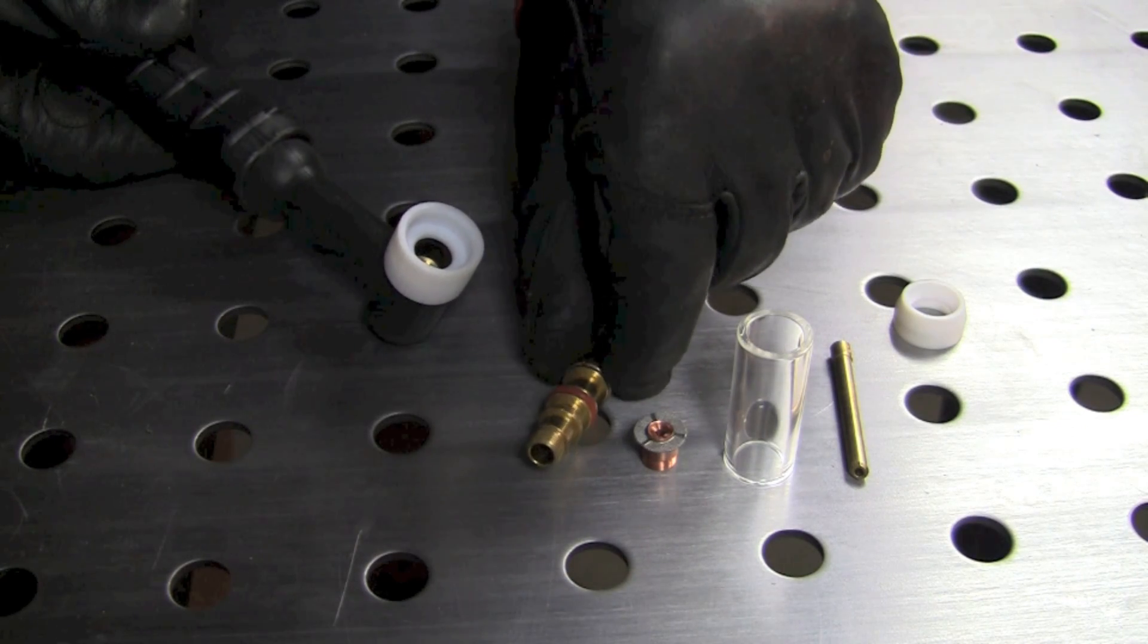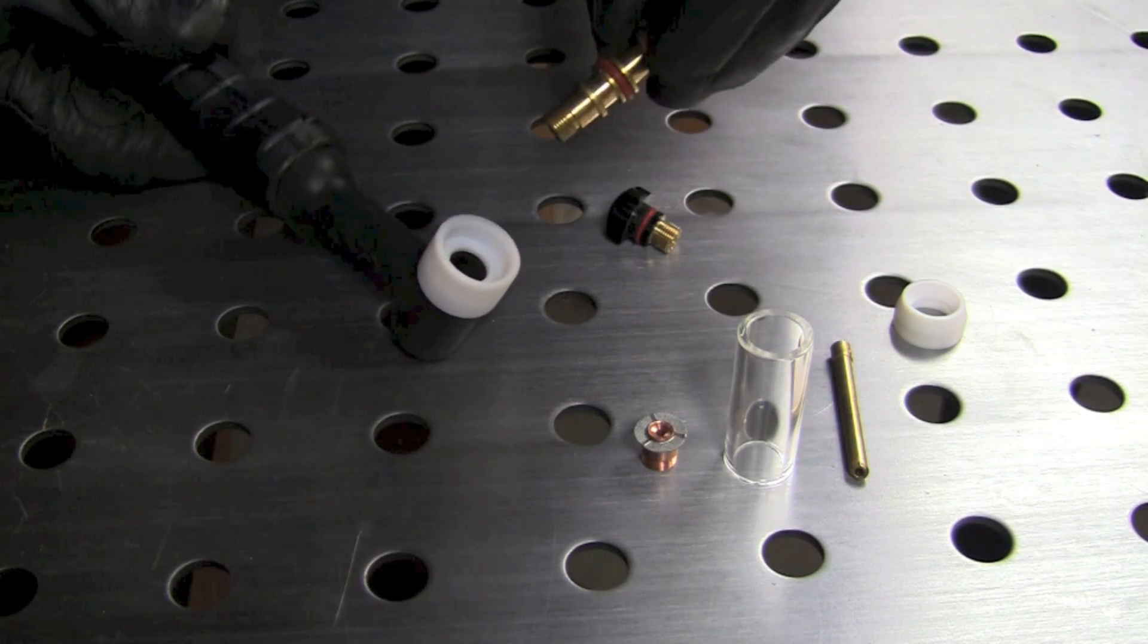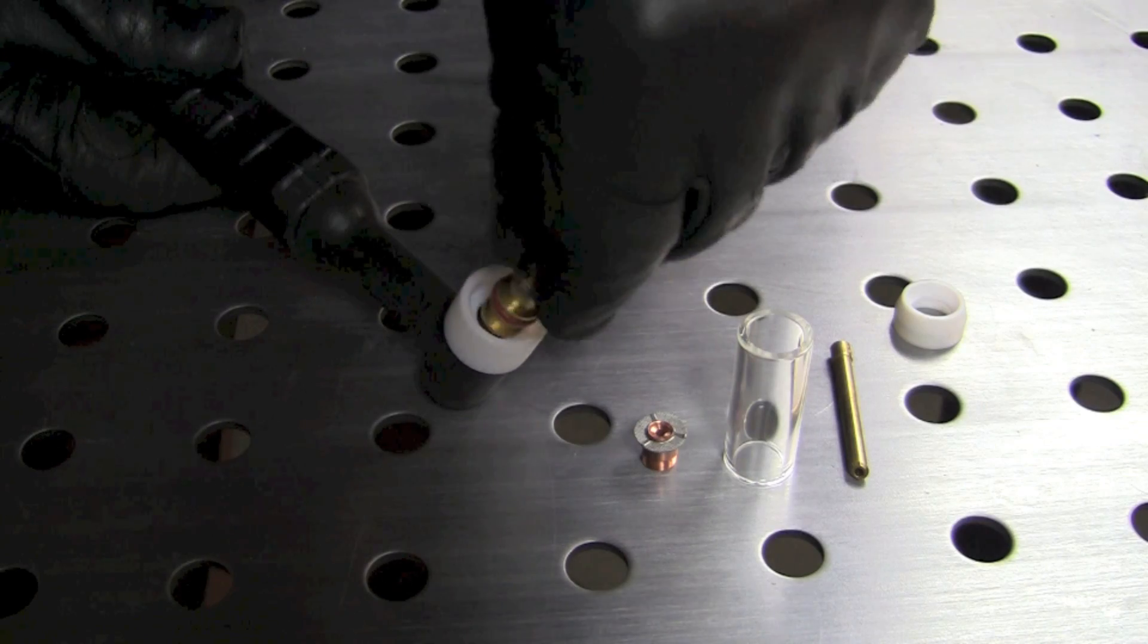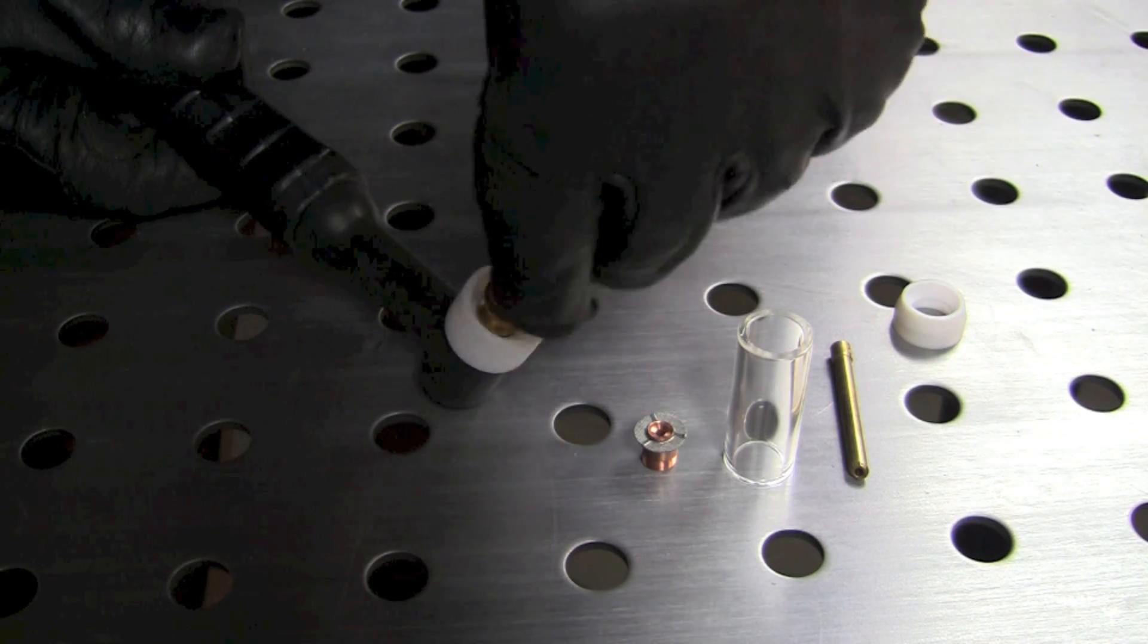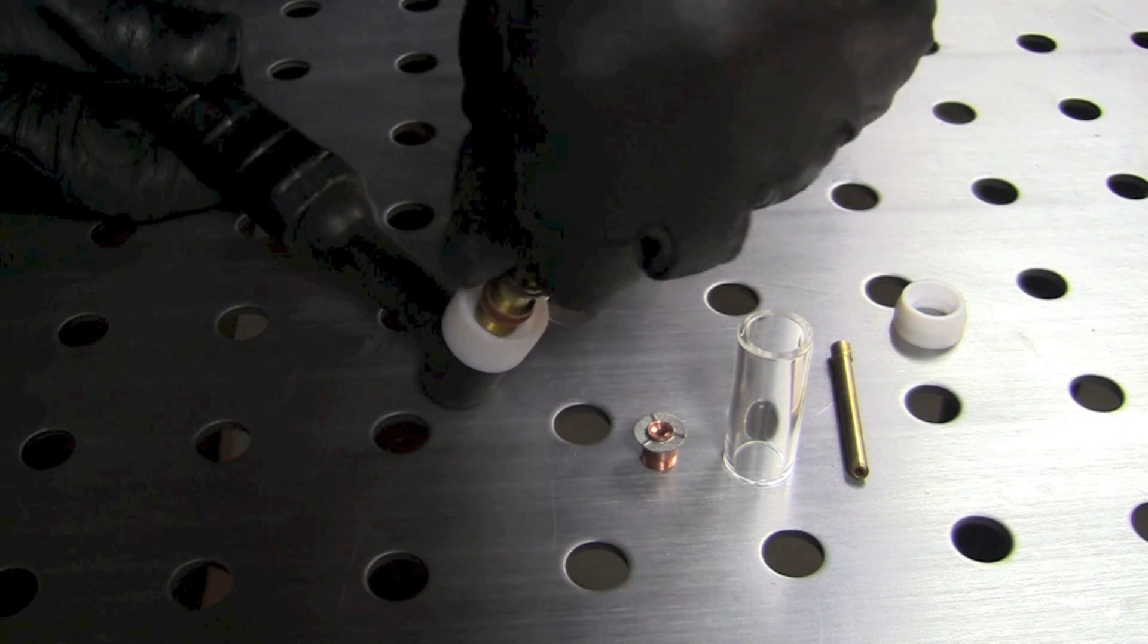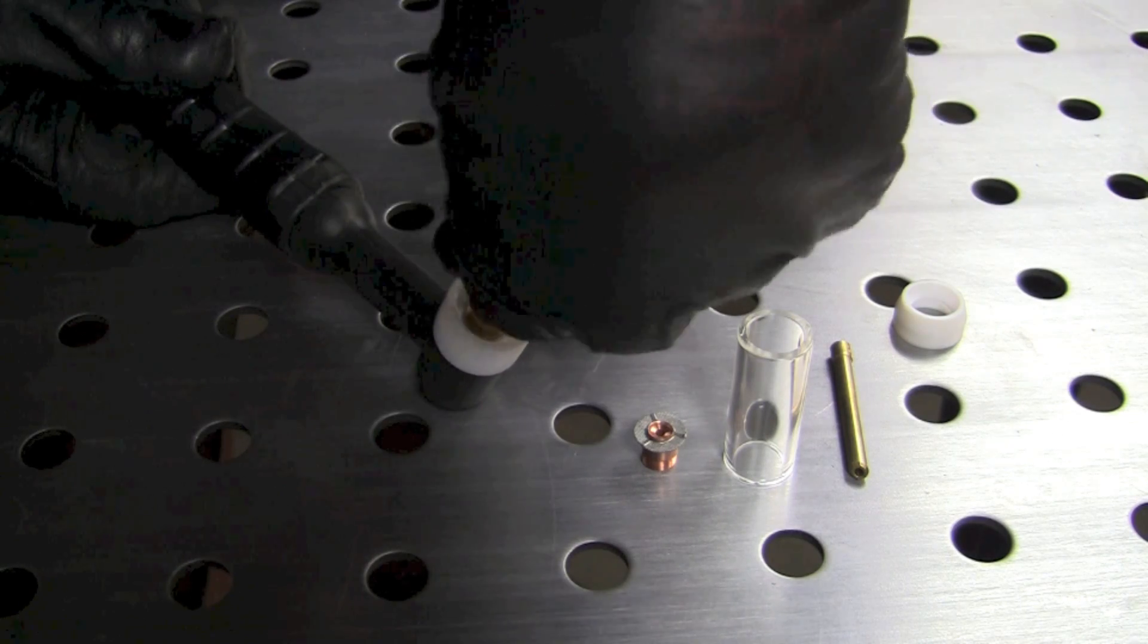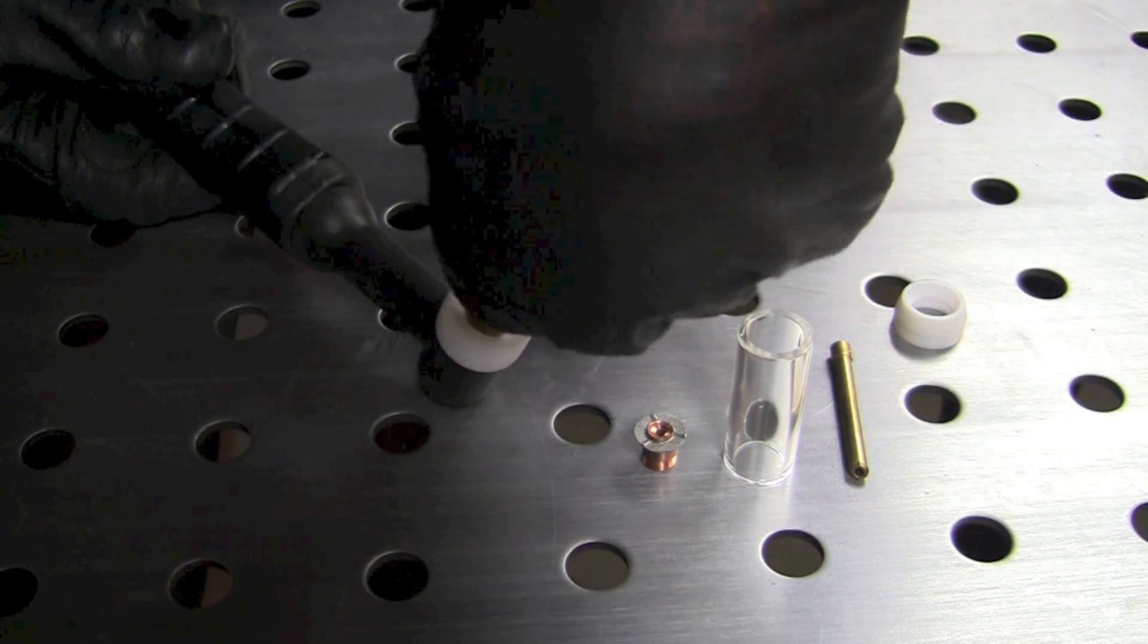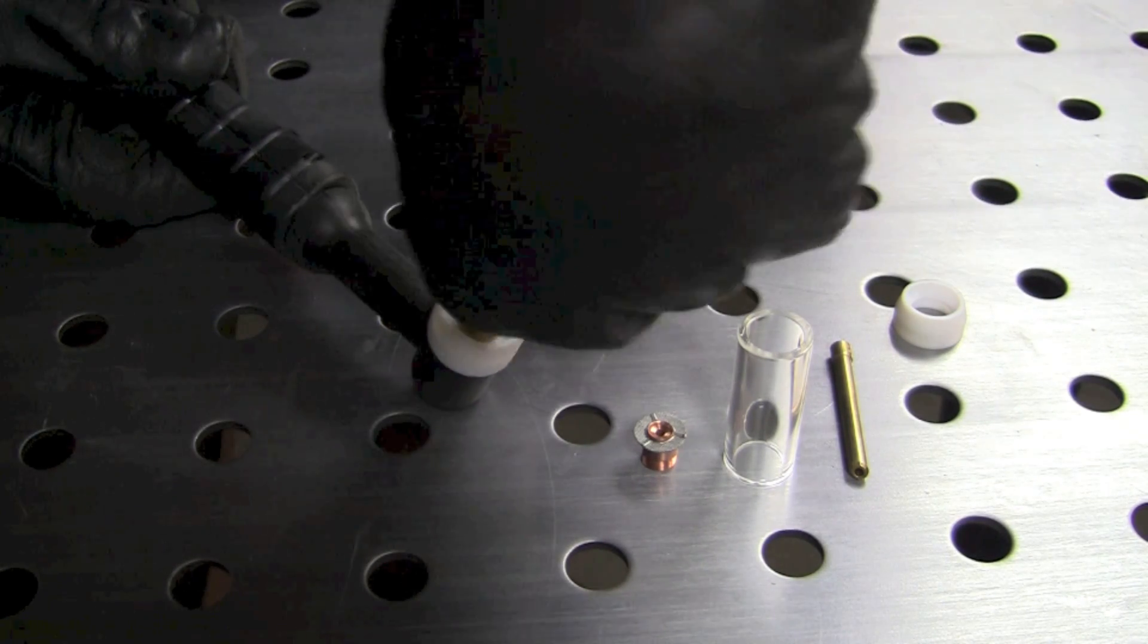The next piece we're going to use is the collet body. I'm going to stick the collet body through that Teflon insulator and thread that down finger tight.